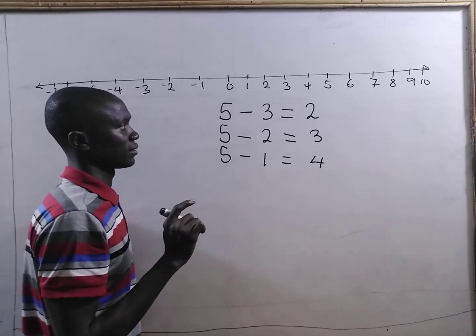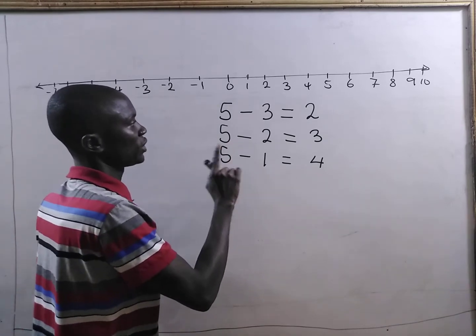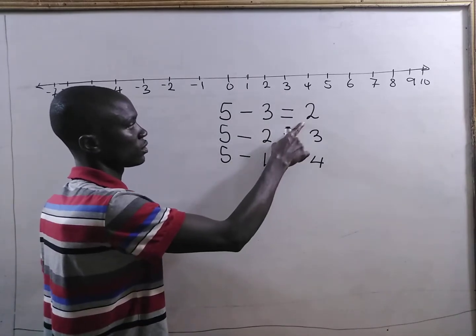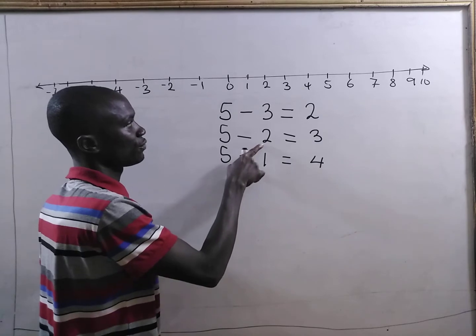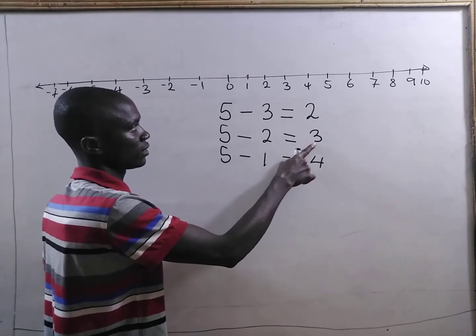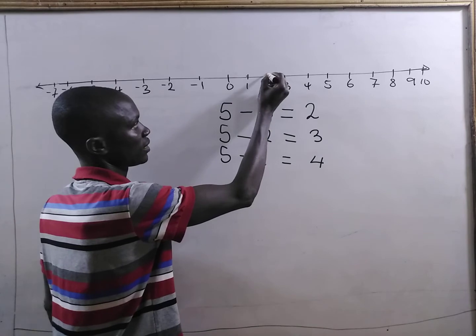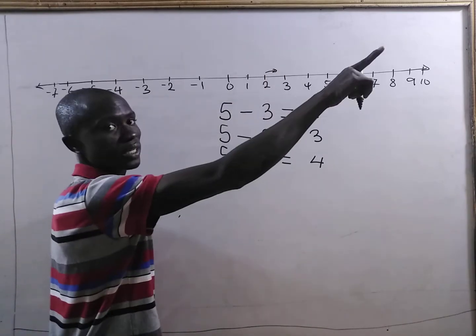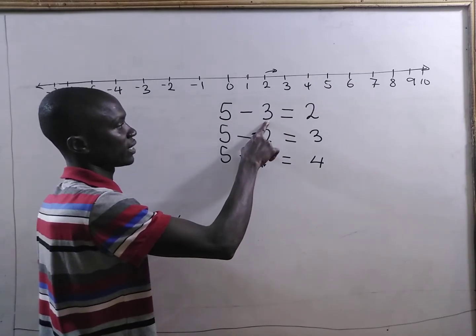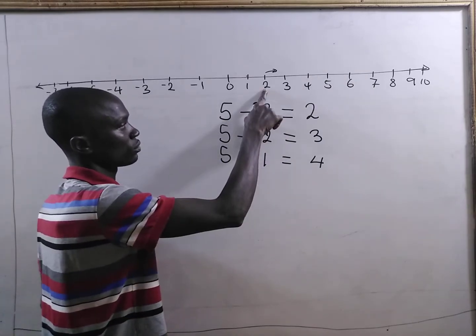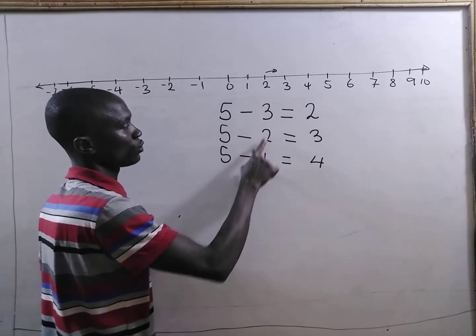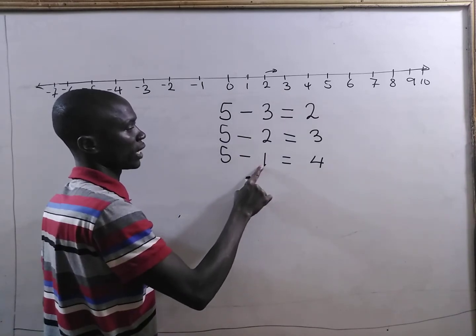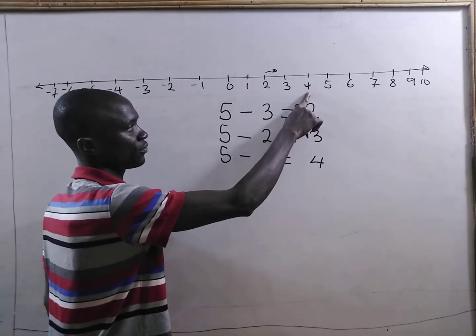Now, let us look at the pattern. You see that if we take 5 minus positive 3, we are getting positive 2. We see that the answer is moving this way. 5 minus positive 3 gives positive 2. 5 minus positive 2 gives positive 3. 5 minus positive 1 gives positive 4.